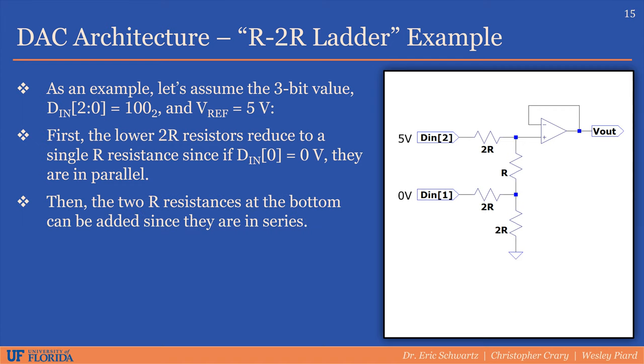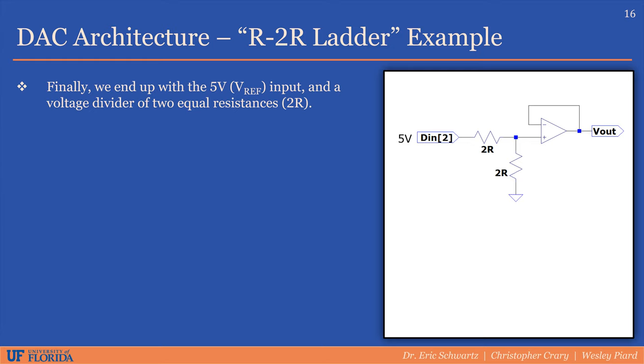In this example, this process repeats until we get to the most significant bit input. We end up with a voltage divider between 5 volts, two equal resistances, and ground, which results in an output voltage of half of 5 volts, or 2.5 volts.